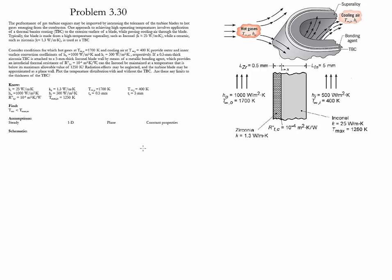The aim of the problem is to evaluate whether the effect of the thermal barrier coating is going to allow the blade to be maintained at a temperature below a maximum value. It is also desired to plot the temperature distribution with and without the thermal barrier coating and we need to find out also whether there are some limits for the thickness of this barrier.